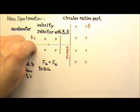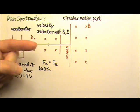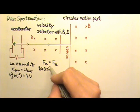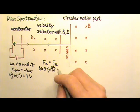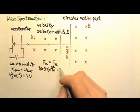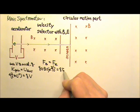V goes that way, B goes into the paper, so the angle between v and B is 90 degrees, and sine 90 degrees is 1. The electric force of a charge q inside the electric field E is F equals qE.